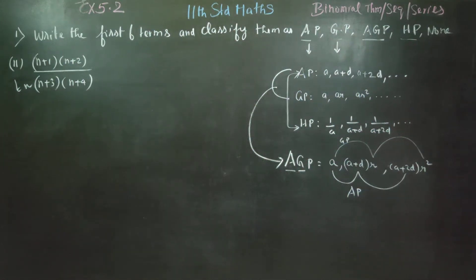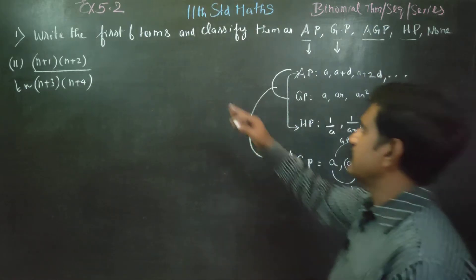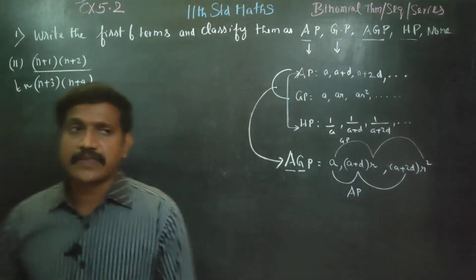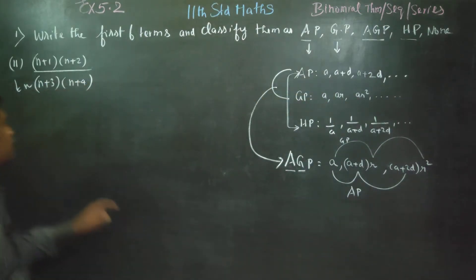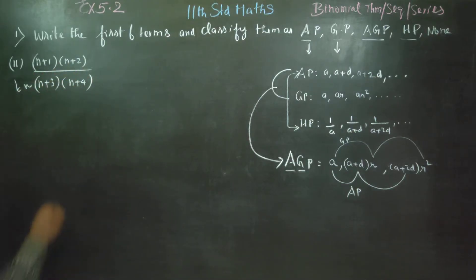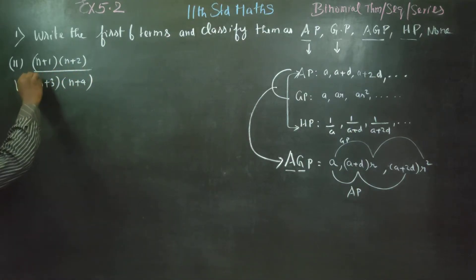Dear 11th standard students, in Exercise 5.2, Sum 1, second subdivision, the question asks us to write the first six terms. The given formula is tn = (n+1)(n+2)(n+3)(n+4).